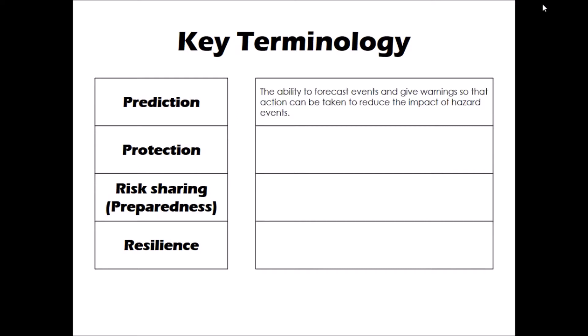We can think about managing hazards in a number of different ways, some more successfully for some hazards than others. Prediction is probably one of the first steps that might be taken. This is all about the ability to forecast events and give warnings to people so that action can be taken — trying to predict and forecast when a volcano might erupt, or when a tropical storm might actually hit land.